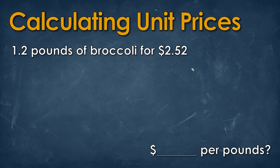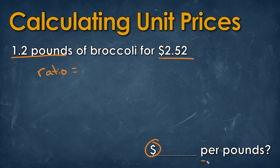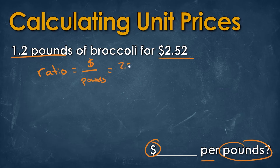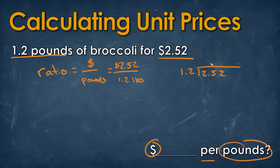Now let's try this example. We have two pounds of broccoli for $2.52. Our ratio, the way our answer wants it, is in dollars per pound. We have $2.52 for the dollars and 1.2 for the pounds. We can do long division or use a calculator. That gives us 21 cents per pound.